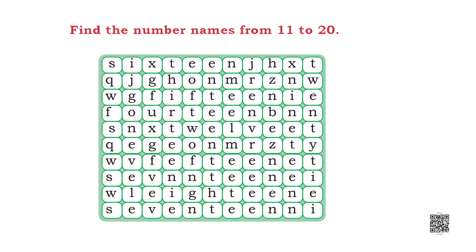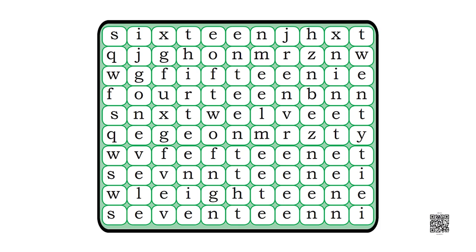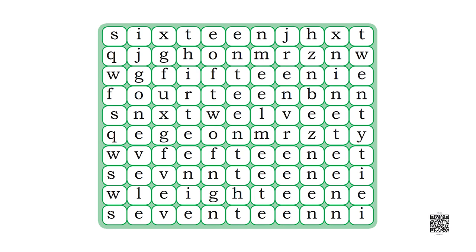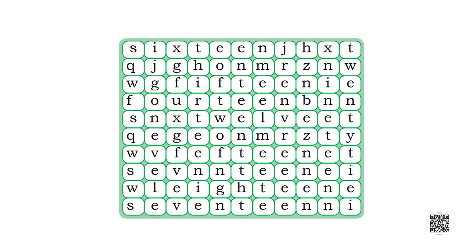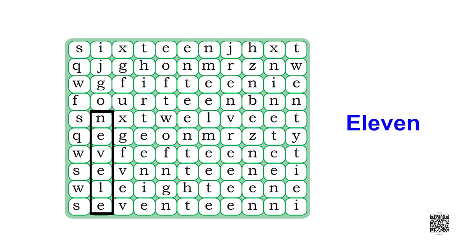Find the names of numbers from 11 to 20. Look at this square shape which has many boxes inside and each box has different letters. You have to create names for numbers 11 to 20 by choosing letters from these boxes. Let us try and see how. The first number is 11, so the name of 11 starts from the last box of the second row of this square shape.